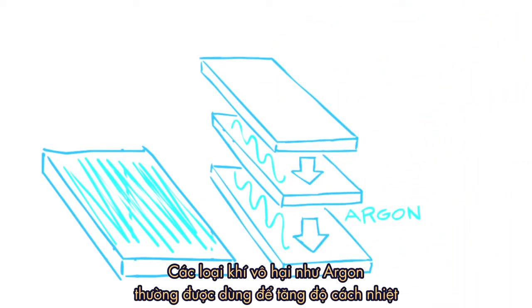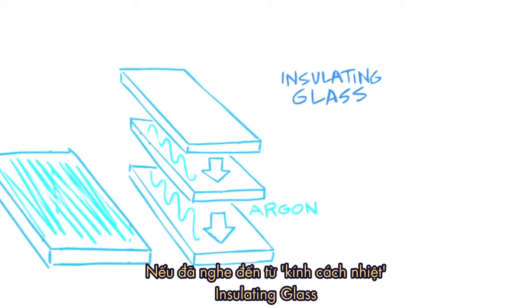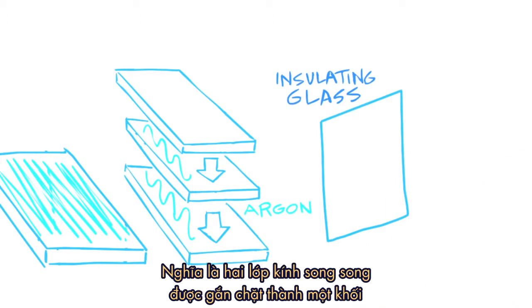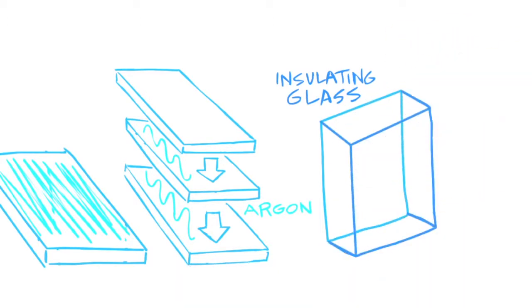Harmless gases like argon are often used to improve thermal performance. If you hear the term insulating glass, it means two pieces of glass have been spaced apart and sealed to form a single unit.